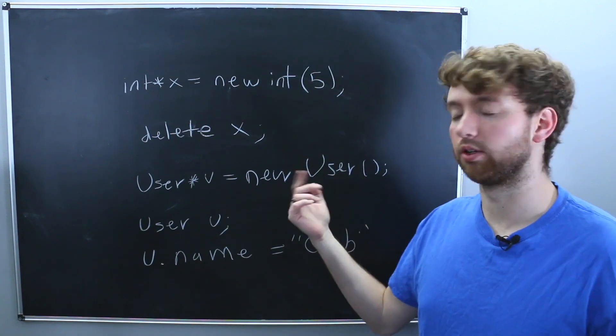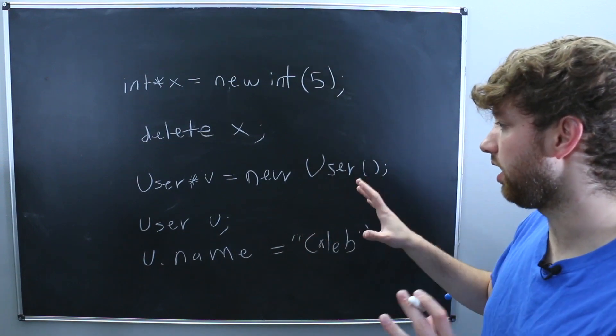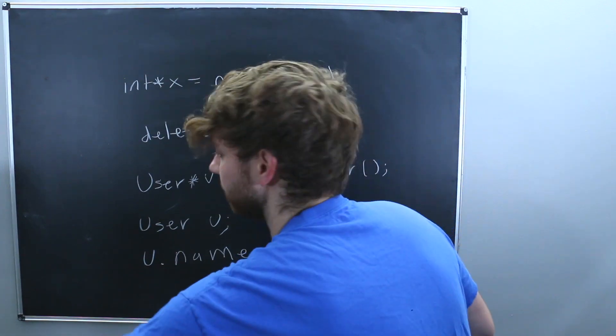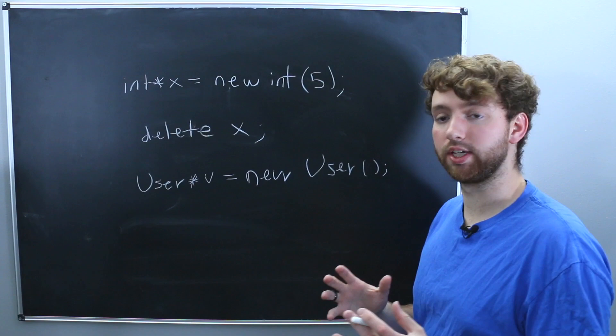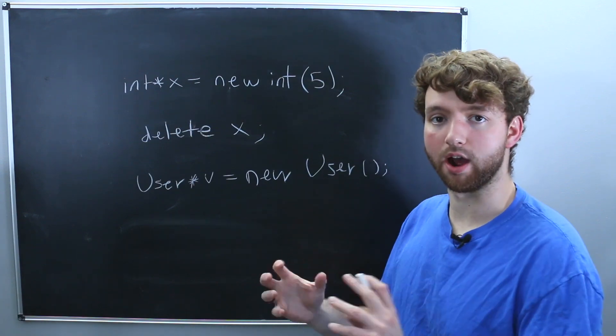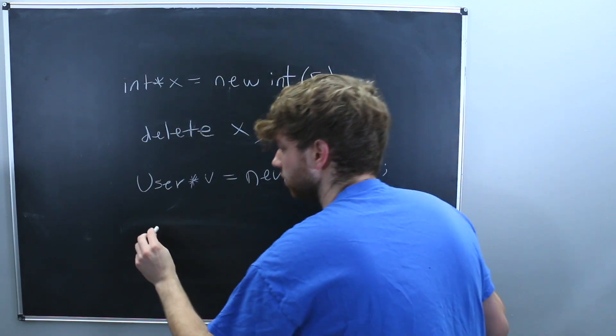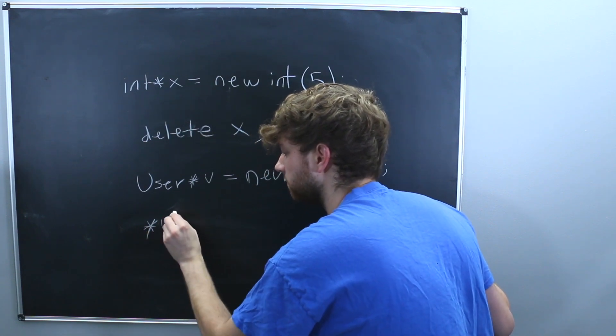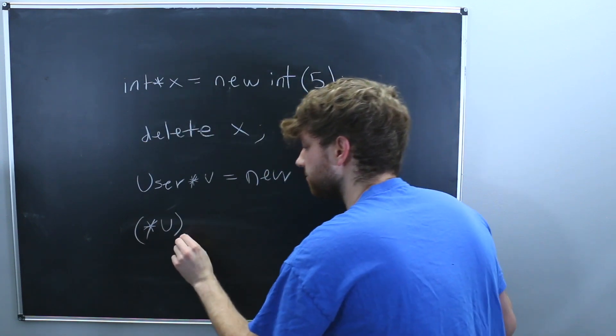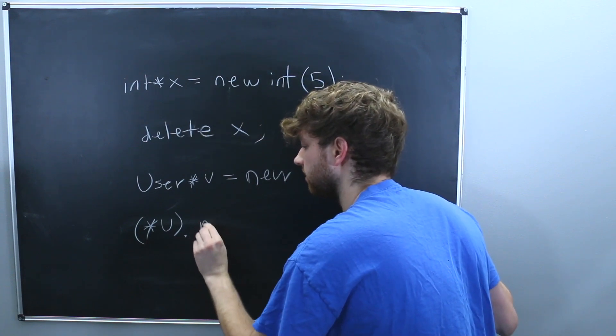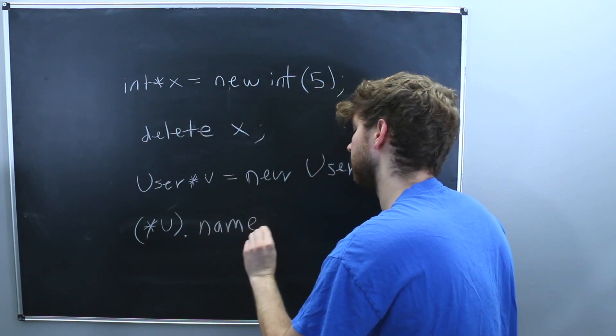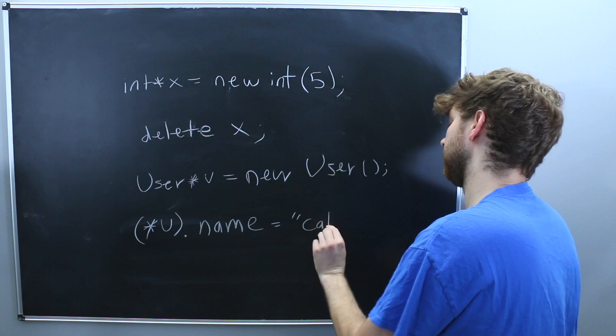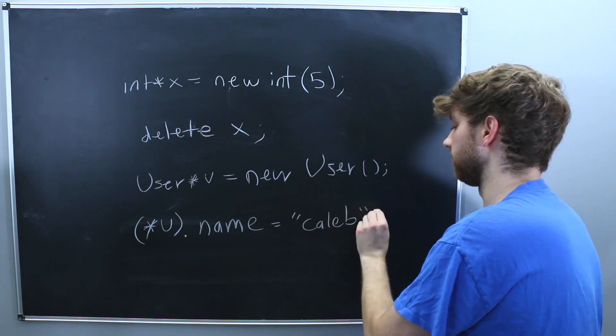However, you are often going to run into this new keyword. So if by chance you have to do it this way, what you're going to have now is a pointer. So if you want to work with that object's attributes, you would say dereference u, put that in parentheses, and then dot name. So that is how you would work with the data.